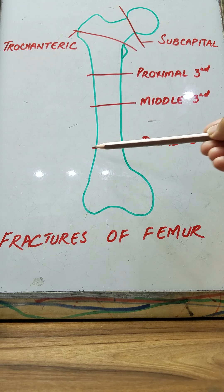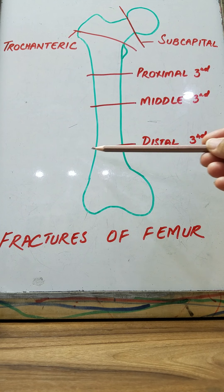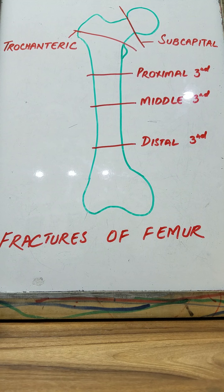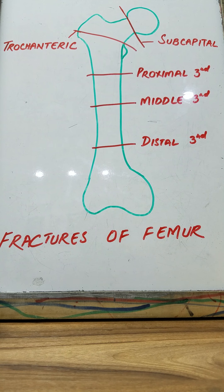In a fracture of the distal third of the shaft of the femur, all the effects on the proximal fragment remain the same. However, the distal fragment is much smaller and is rotated backwards to a much greater degree by the gastrocnemius muscle. As a result of this backwards pull, there can be pressure on the popliteal artery, which can then interfere with blood supply to the leg and the foot.